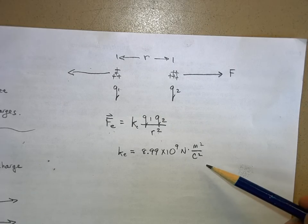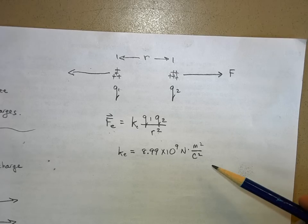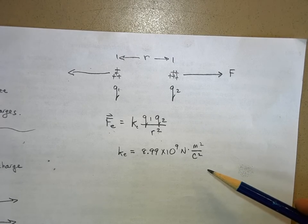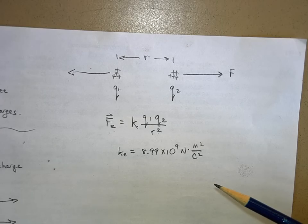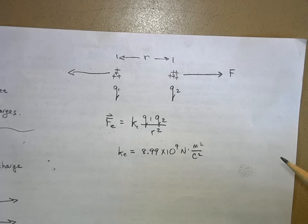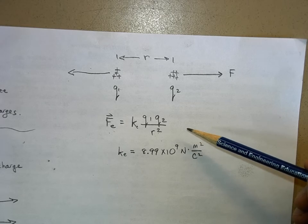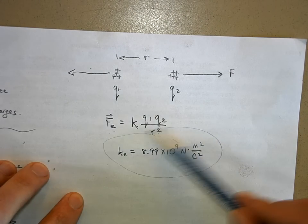This is a huge, huge number. If I had one coulomb of charge one meter away from another coulomb of charge, there would be about 9 billion newtons of repulsive force — that would be bad, you would not want to be in the area. A coulomb of charge is actually easy to collect, and so the electric force is absolutely huge. This constant of nature measures how strong the electric force is.